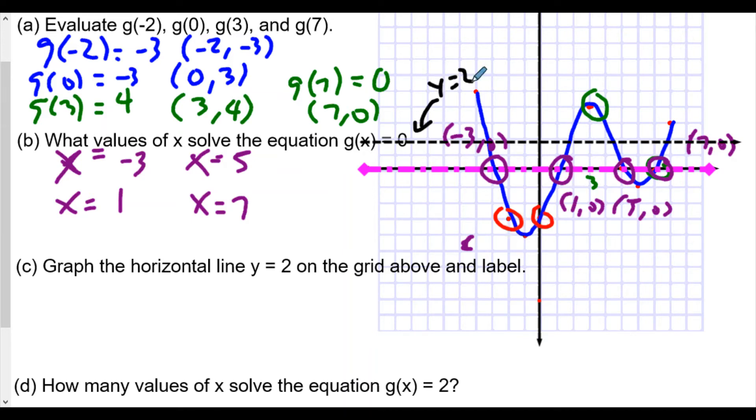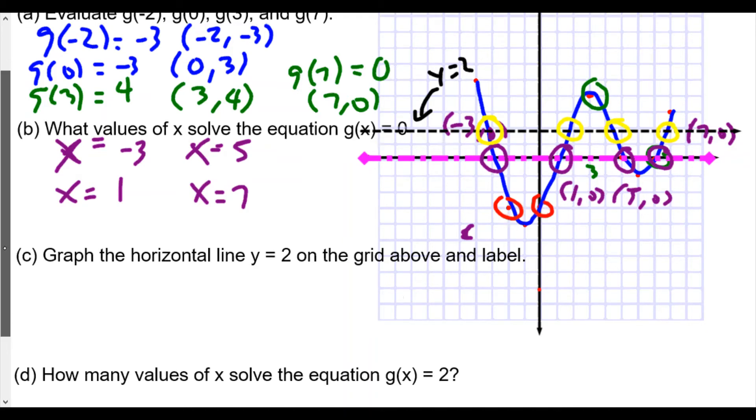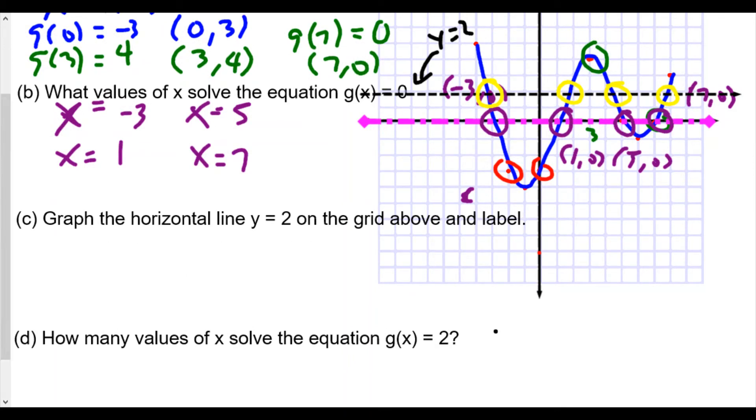So down that line, every single point has the value of y equal to 2. So how many values of x solve the equation g of x equals 2? Now I'm not looking for the values of x. Just how many of them are there? So we see one point here, two point here, three points here, and four points here. And so how many values of x? Well, we're going to say in this case, four values. And we found them. We circled them on that, where the line y equals 2 crosses the graph.